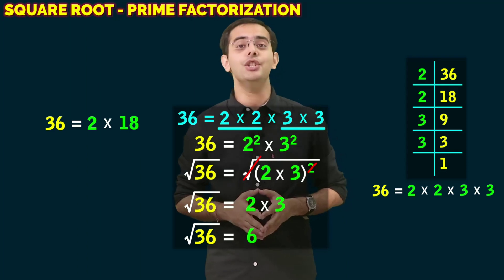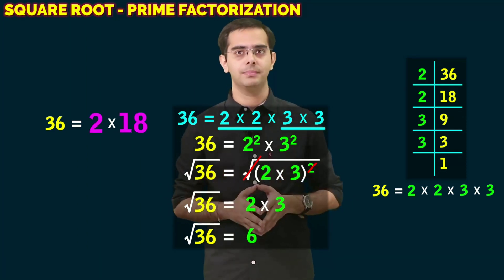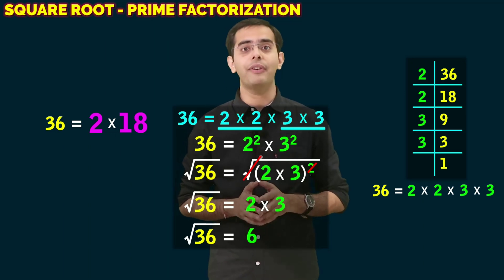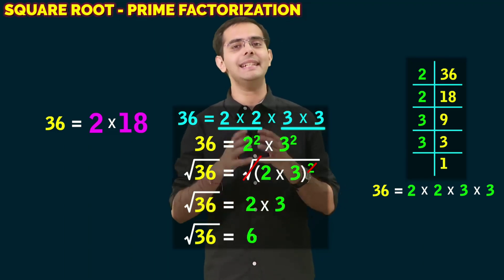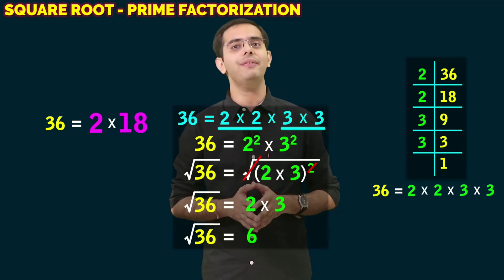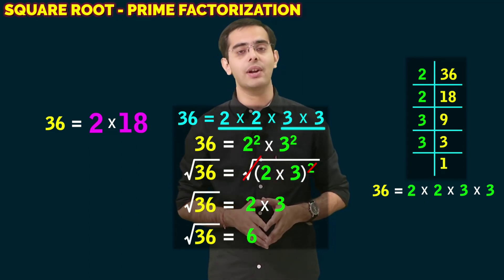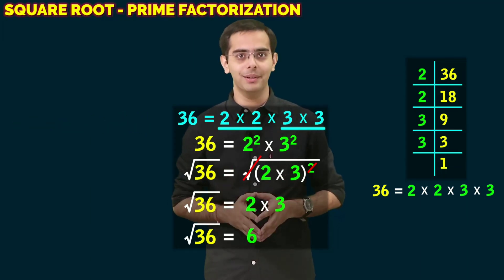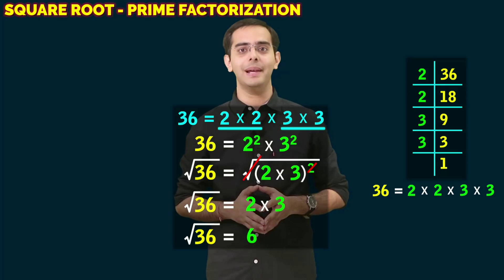Yes, here we cannot pair any factor. If you want to pair the factors, we will have to find the factors of 18 as well. Prime numbers are the only factors that cannot be factorized further. So it is easy to find the square root of a number through prime factorization method.